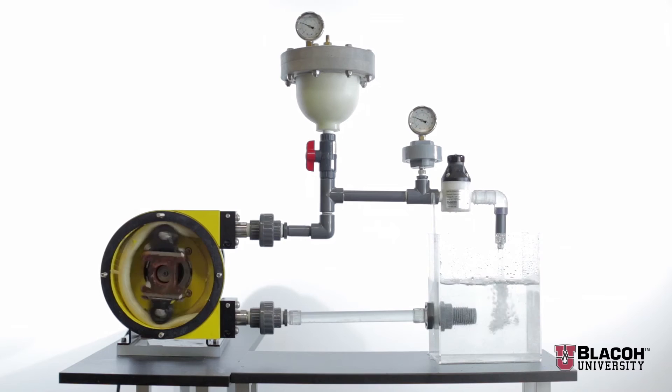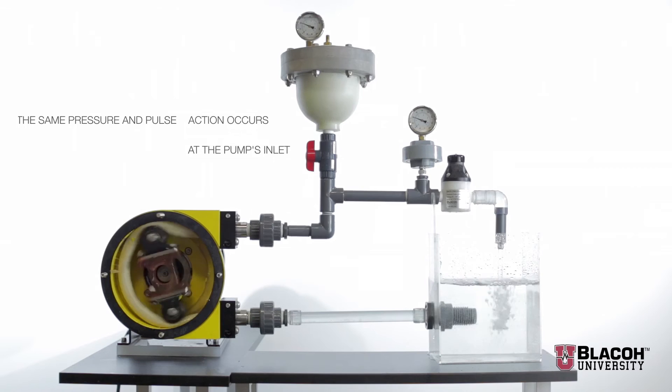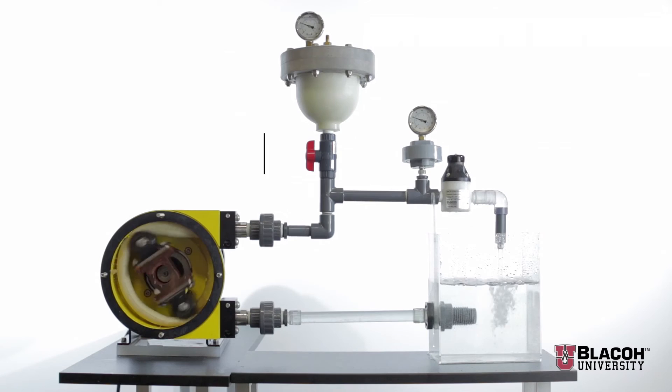While the inlet stabilizer is not pictured in this demonstration, the same pressure and pulse action occurs at the pump's inlet. As a roller shoe passes across the pump inlet and closes it off, flow into the pump will momentarily stop.